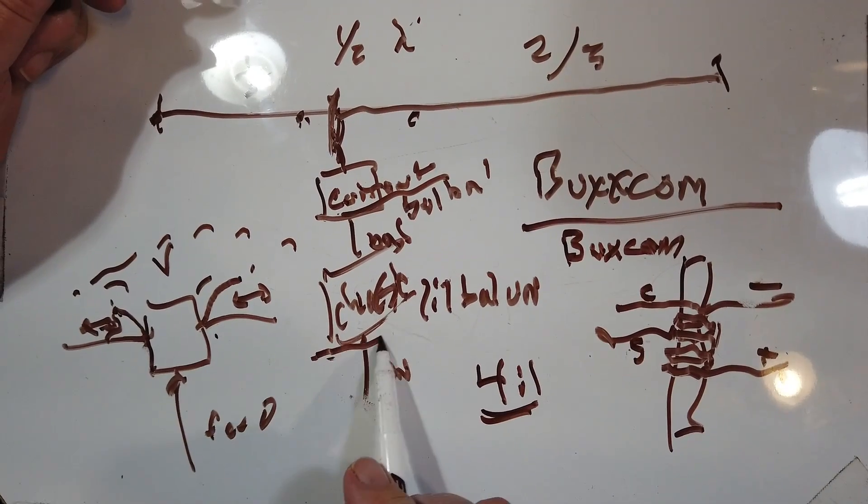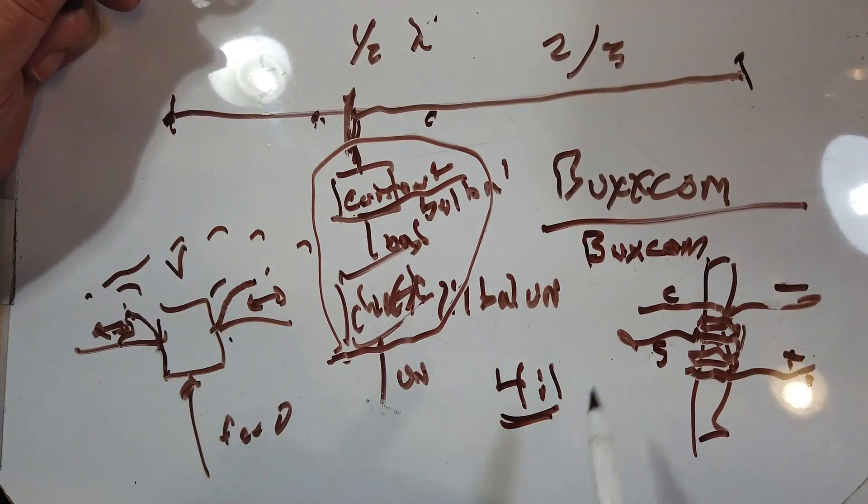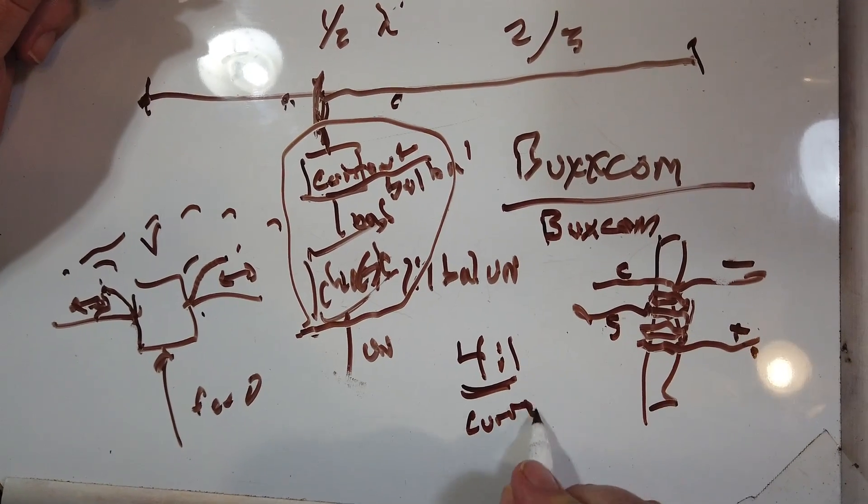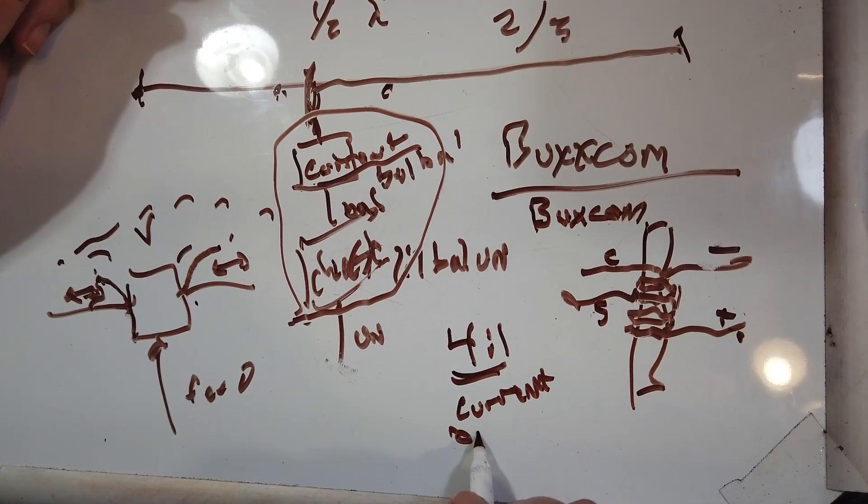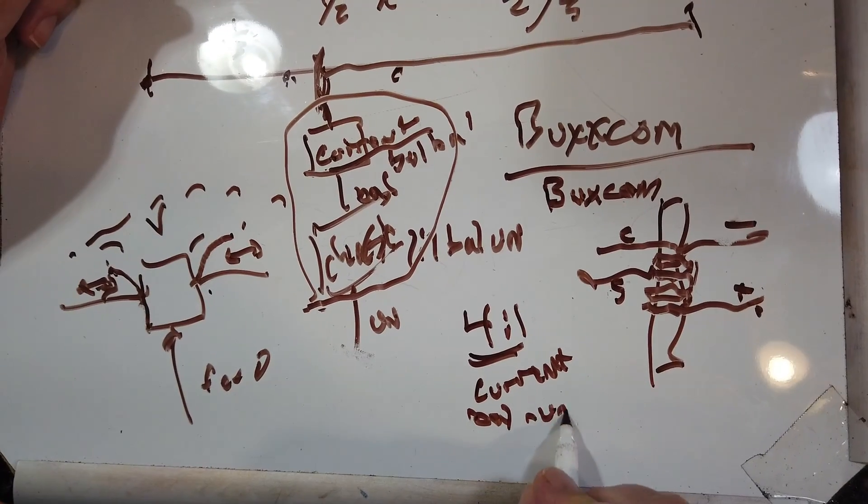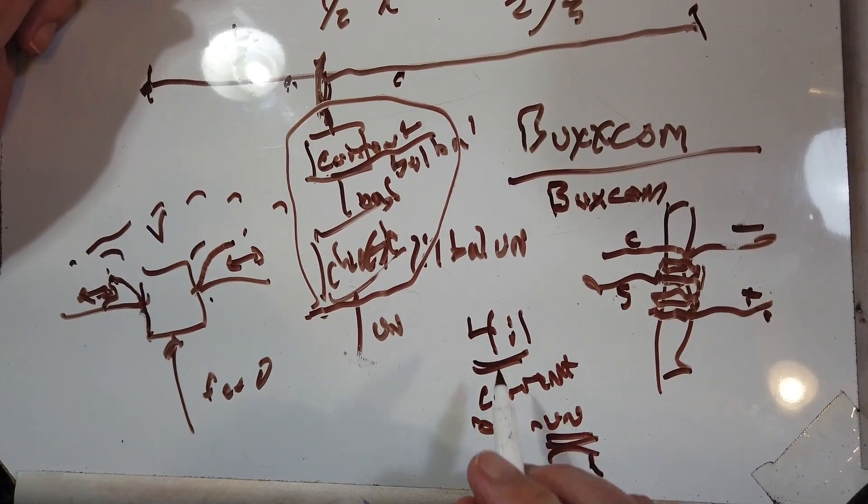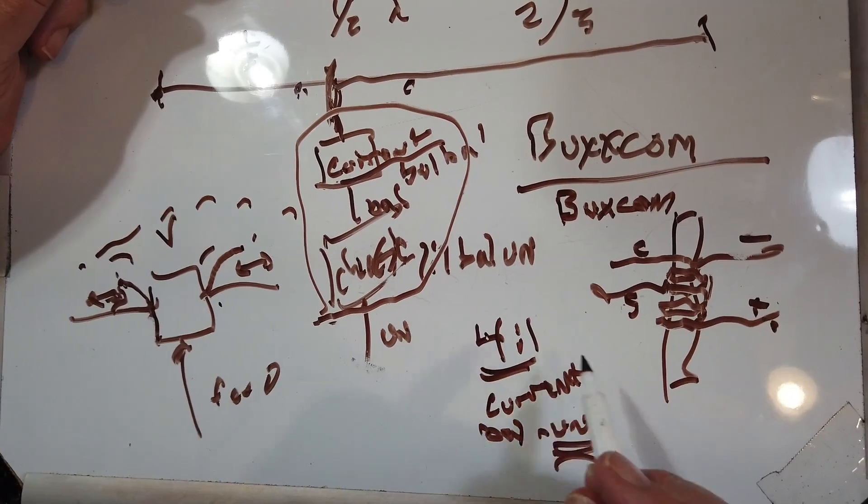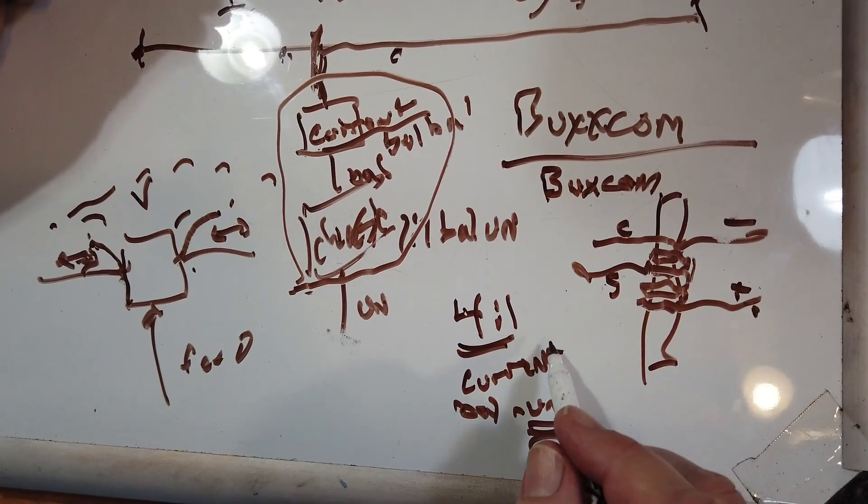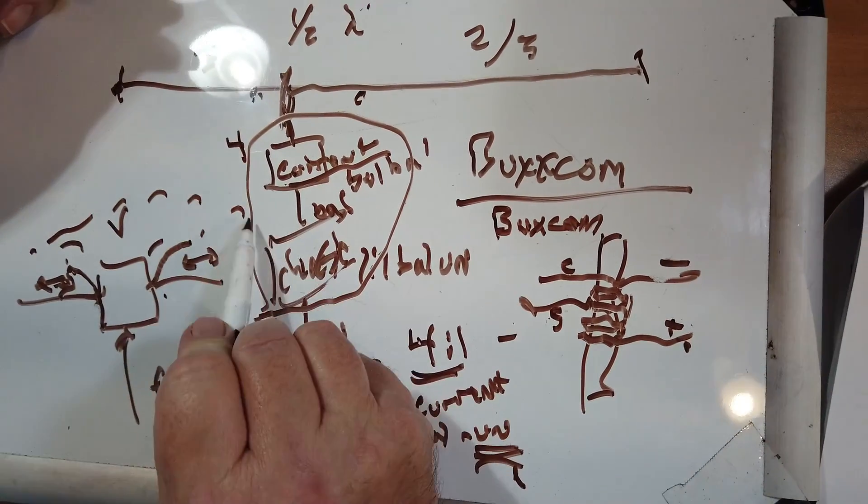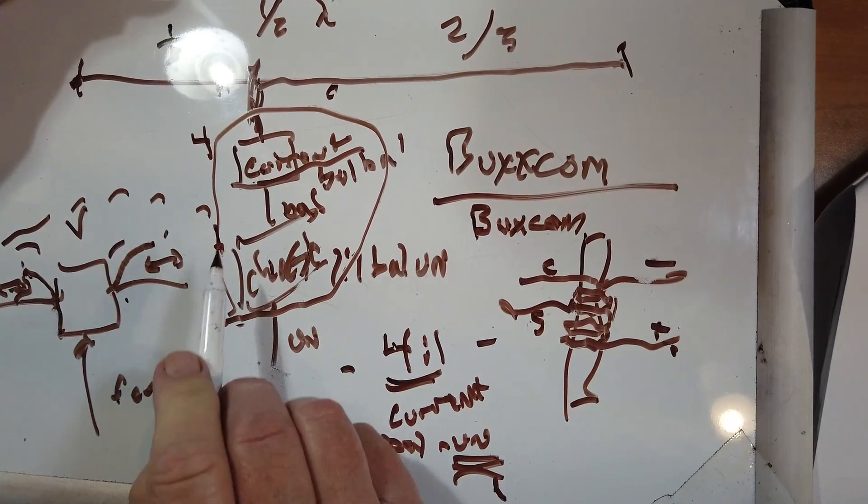So I would take both of these and replace it with a four-to-one current balun and make sure it's actually a bal-un. Because you want the un side to go to your feed line. And you want the four side to go to the antenna. So this would be four, this would be the one.